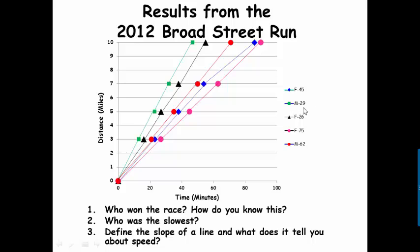Female 45, male 29, female 26, female 75, and a male 62. That's the beauty of road races, right? All kinds of genders and huge age range. And from the data that they report on the race, I was able to plot at three miles what their times were, five miles, seven miles, and ten miles. And this is the plot.